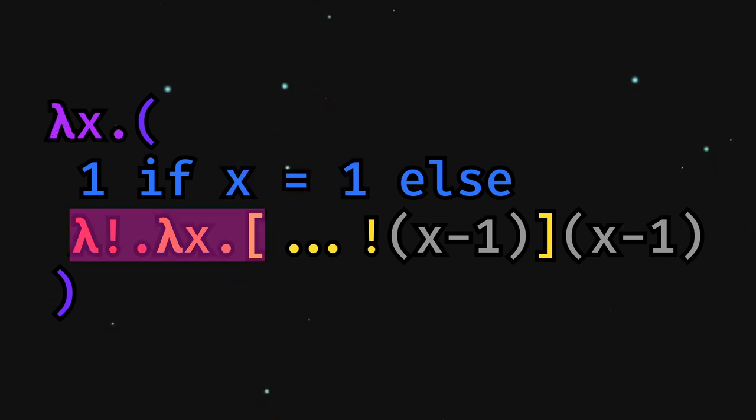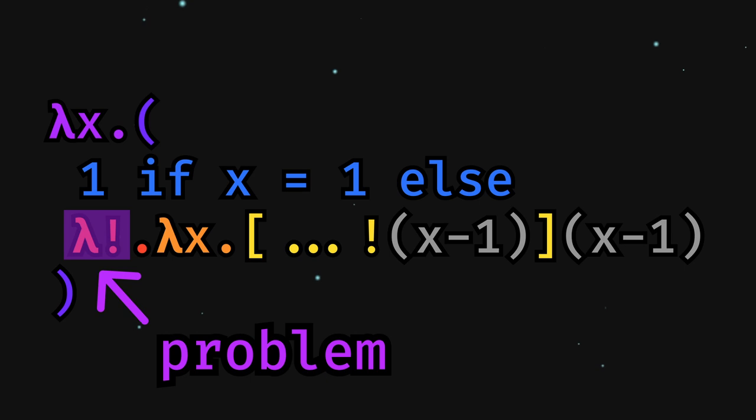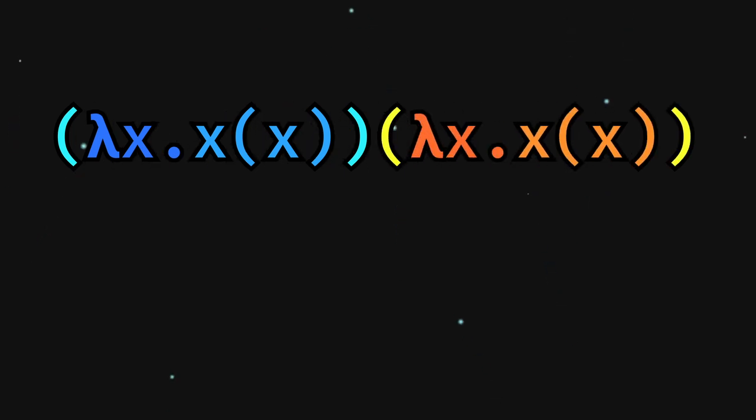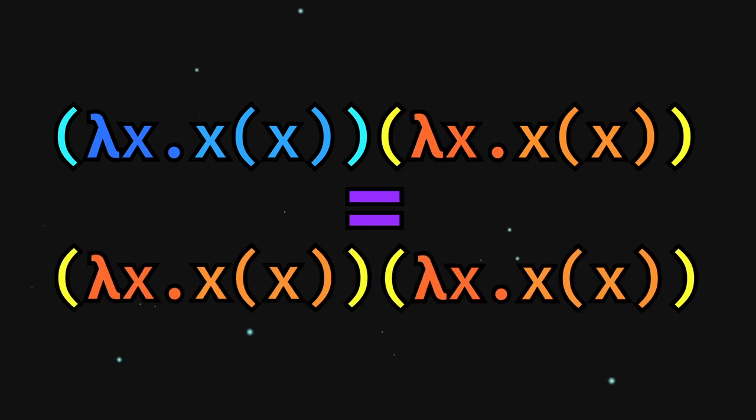The problem is that if we pass it anything other than 1, it'll break, as it has a reference to the whole factorial function and not just the math part. But what if we take the lambda x dot x x and pass it to itself? To evaluate, we replace every instance of x on the left with this whole right-side expression. This returns exactly what we had originally.